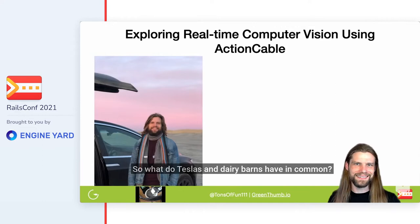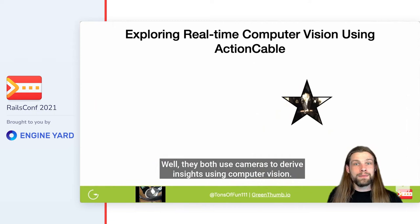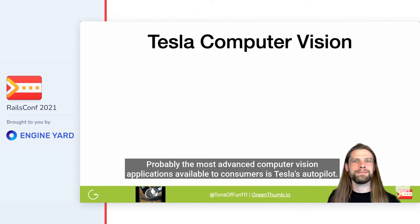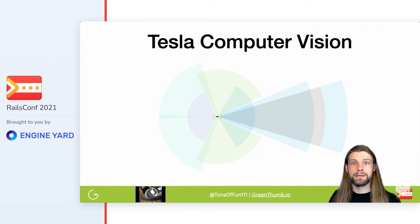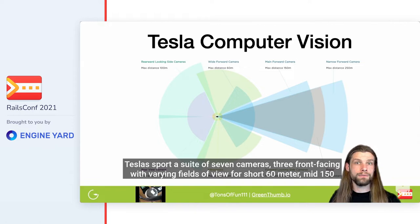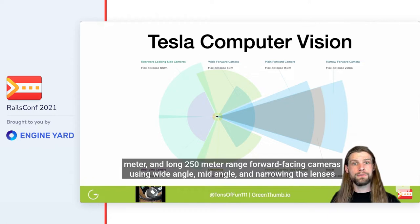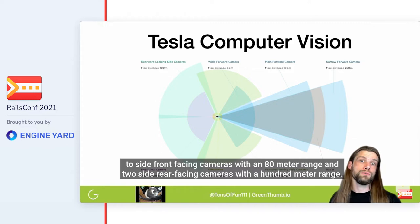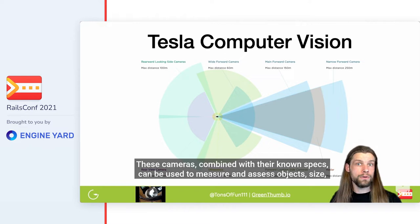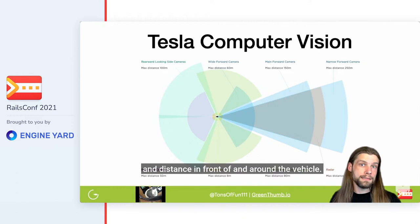So what do Teslas and dairy barns have in common? Well, they both use cameras to derive insights using computer vision. Probably the most advanced computer vision application available to consumers is Tesla's Autopilot. Teslas sport a suite of seven cameras: three front-facing with varying fields of view for short 60-meter, mid 150-meter, and long 250-meter range cameras using wide-angle, mid-angle, and narrow-angle lenses. Two side-front-facing cameras with an 80-meter range, and two side-rear-facing cameras with a 100-meter range. These cameras combined with their known specs can be used to measure and assess object size and distance in front of and around the vehicle.